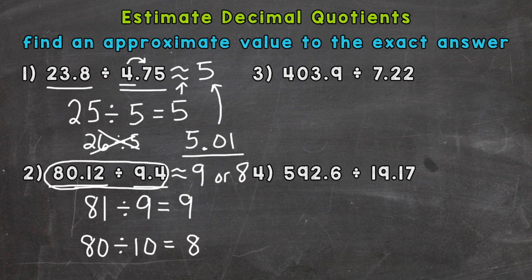We have two estimates: 9 or 8 — both very close to each other, so both are good estimates from two different strategies. The exact answer for number two, rounded to the hundredths place, is 8.52 — basically right in between our two estimates. Again, both great estimates using two different strategies.